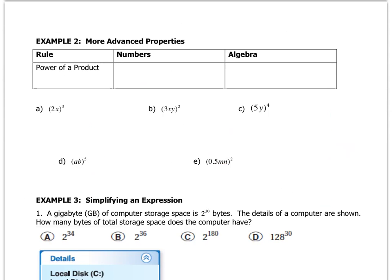There's another property called the power of a product property, and it goes like this. If you had, for example, 3 times 2 squared, that's the same as 3 squared times 2 squared. It only works for a product.